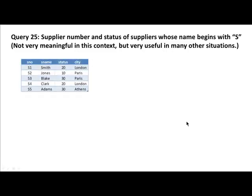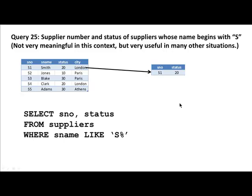The supplier name begins with S only for Smith, nobody else. So that's the only answer — supplier name and status only for Smith. The way you'll write this is: SELECT supplier number, status FROM suppliers WHERE supplier name IS LIKE — that's a new operator we are introducing here. It's LIKE, and we give a pattern. It's a textual pattern, so it's within single quotes, and the pattern says it should start with an S.